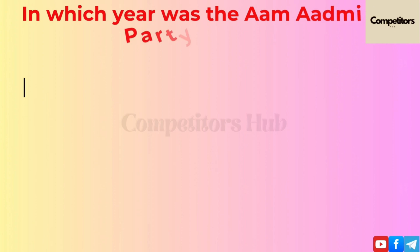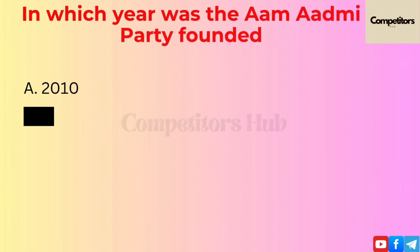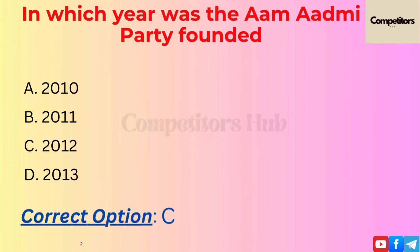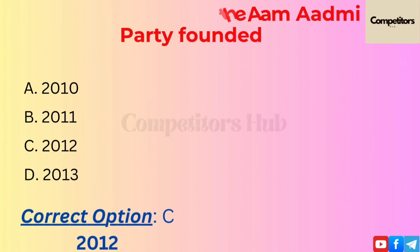The next question is: in which year was the Aam Aadmi Party founded? Option A: 2010. Option B: 2011. Option C: 2012. Option D: 2013. The correct option is C, 2012.